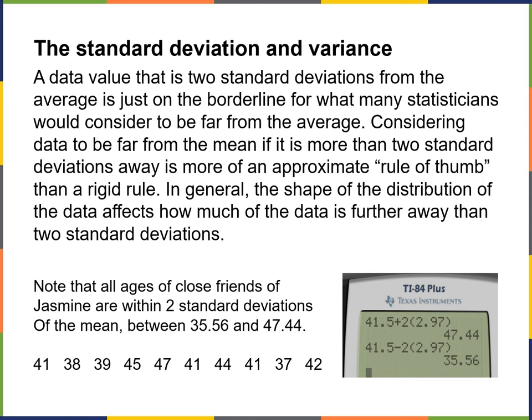Everything in statistics is mostly contextual. In general, the shape of the distribution affects how much of the data is further away than two standard deviations. For example, if Jasmine has a friend who's 10 and a friend who's 80, the standard deviations will be bigger than if most friends are in their late 30s to late 40s. When the numbers come from a census of the entire population and not a sample, we calculate the average of the squared deviations and divide by n. If the data are from a sample, we divide by n minus 1.